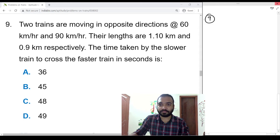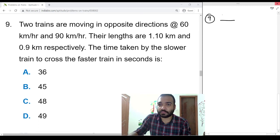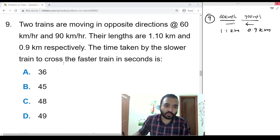Next problem. Two trains are moving in the opposite direction, 60 km/h, one is 60 km/h, another one is 90 km/h in the opposite direction.